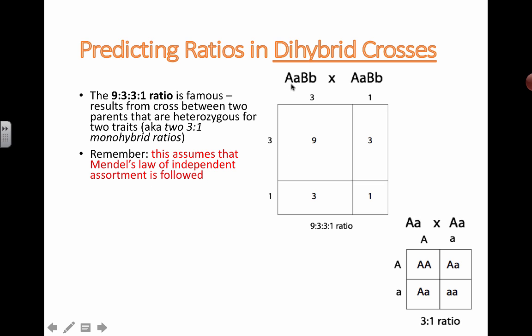That means whatever gets passed on to the kid over here, the big A can get passed on to the sperm cell that's producing the kid and the big B can get passed on, but that is just as likely as big A and a little b getting passed on, which is just as likely as a little a and a big B.